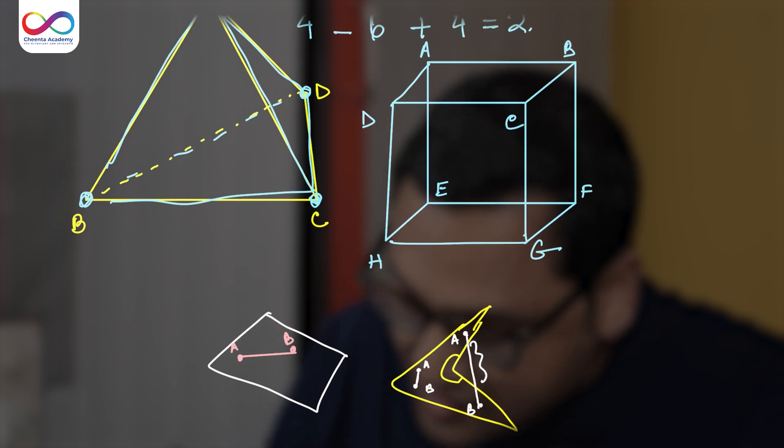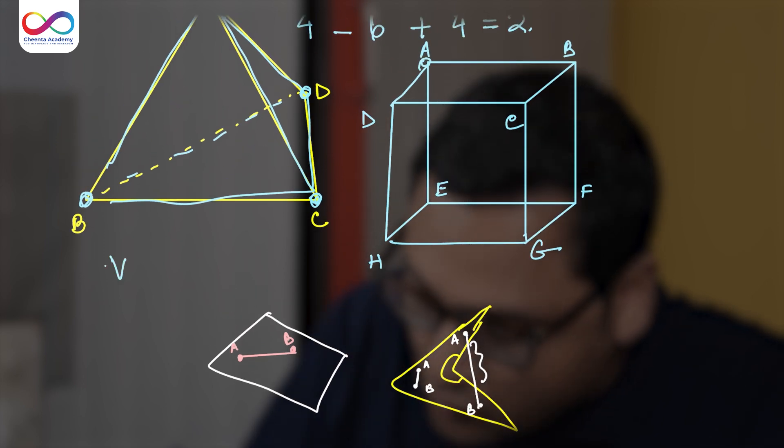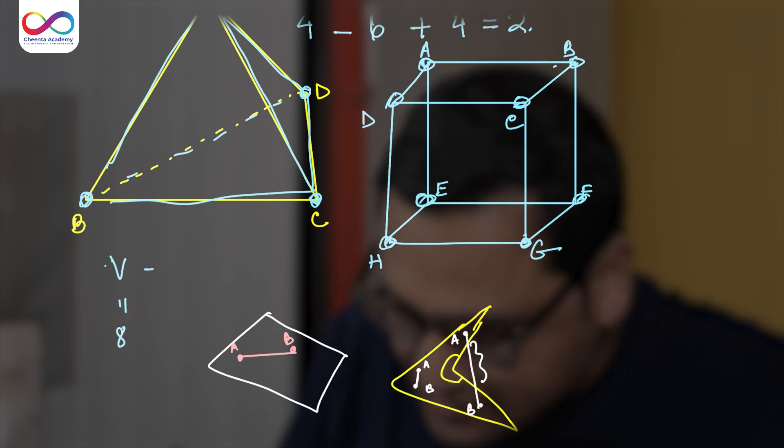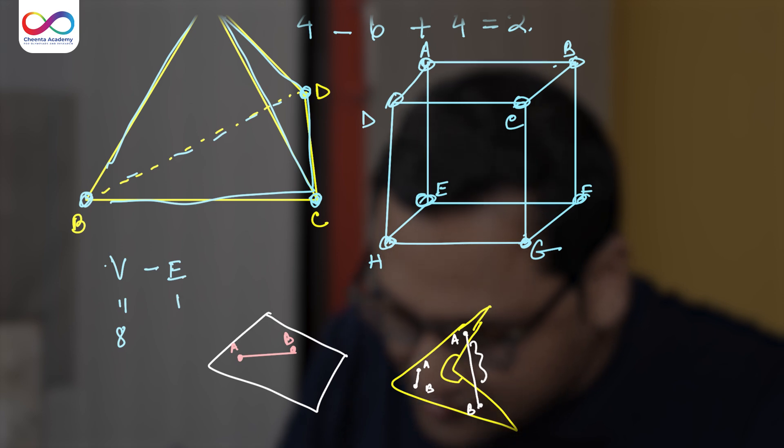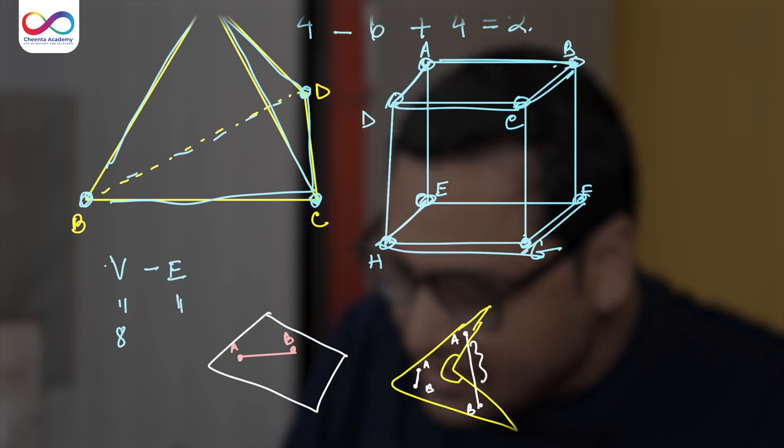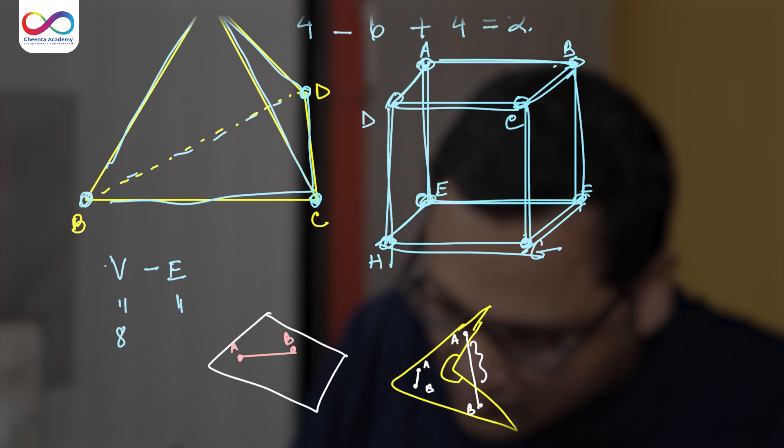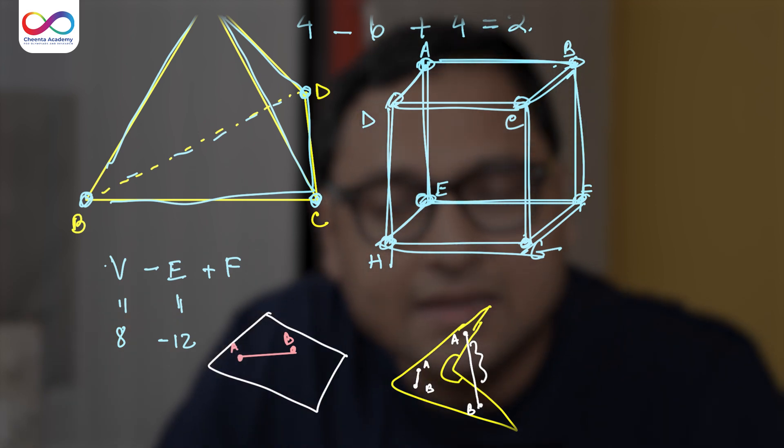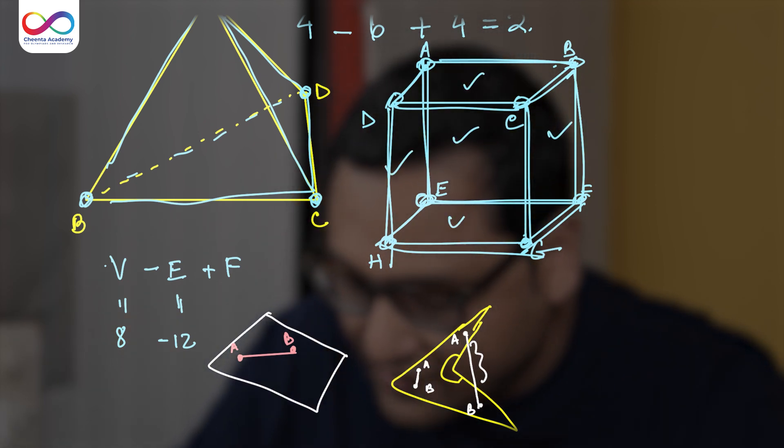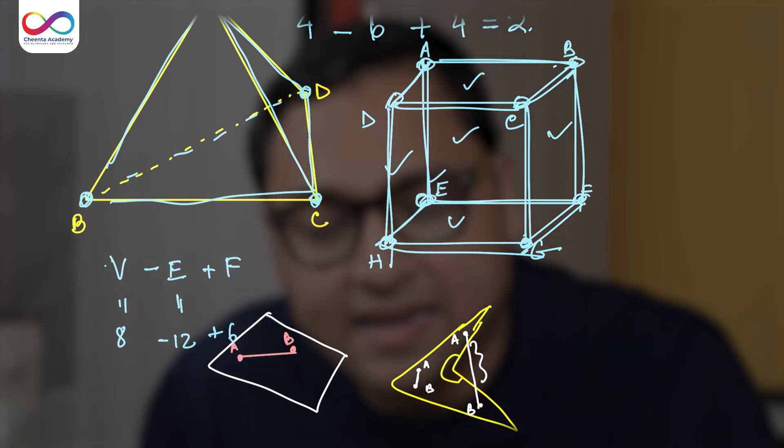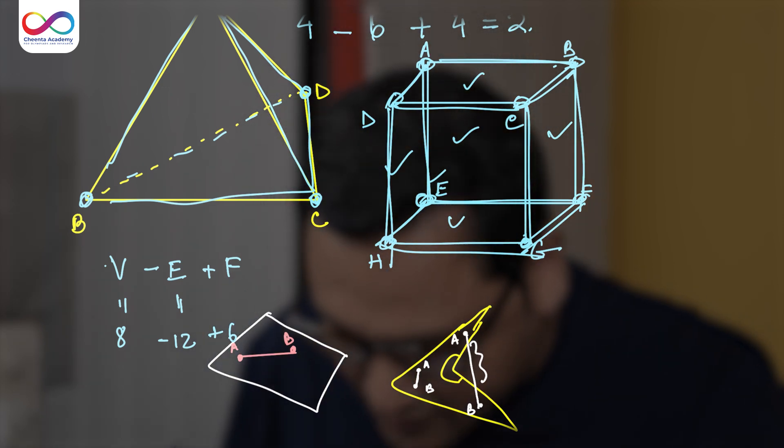So let's do it for a cube. If you have V, the number of vertices is one, two, three, four, five, six, seven, eight. So number of vertices is eight. Number of edges. So you have four at the top, four at the bottom and four edges standing. So 12, so minus 12 plus faces, number of faces. So cube, it has one, two, three, four, five, six faces. So eight minus 12 plus six, that's again 14 minus 12, which is two.